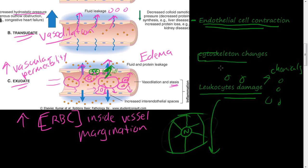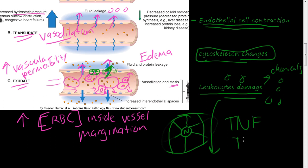These cytoskeleton changes are thought to happen because of the tumor necrosis factor and the interleukin-1 receptors. Those receptors are thought to be responsible for the shrinkage of these cytoskeleton filaments to increase vascular permeability.